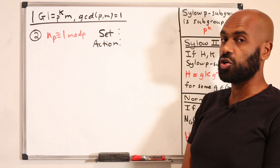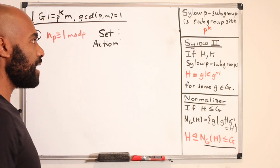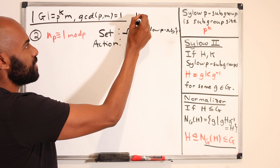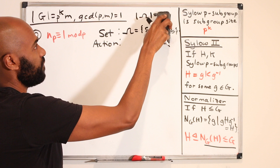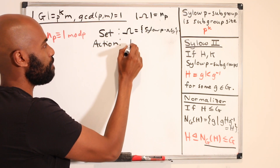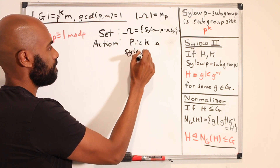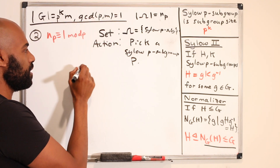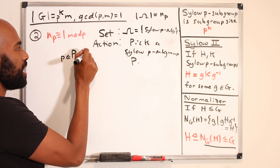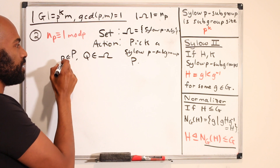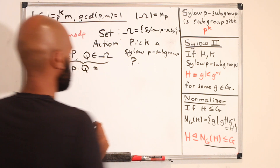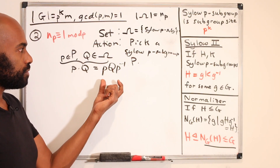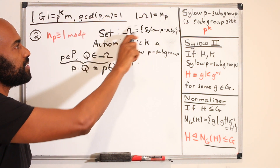Now for the second part: proving n_p is congruent to 1 mod p. We use the same set omega of all Sylow p-subgroups, so |omega| = n_p. But now the action changes: we pick one fixed Sylow p-subgroup P, and let P act on all of omega by conjugation — taking a Sylow p-subgroup Q to pQp-inverse. This is again a Sylow p-subgroup, so the action is well-defined.